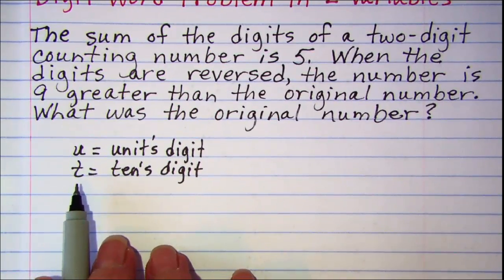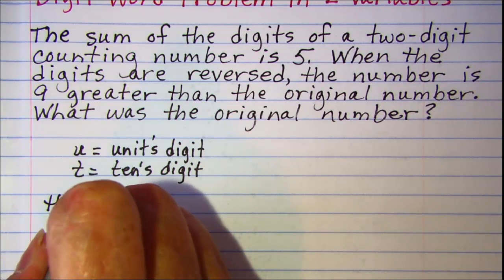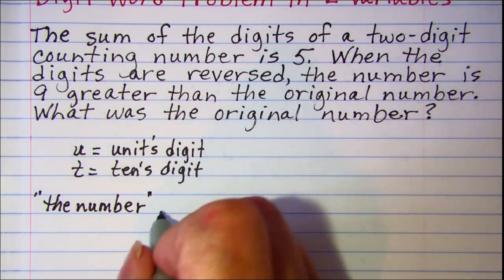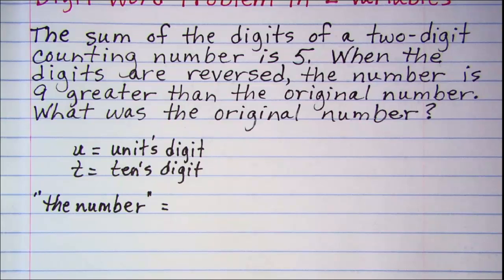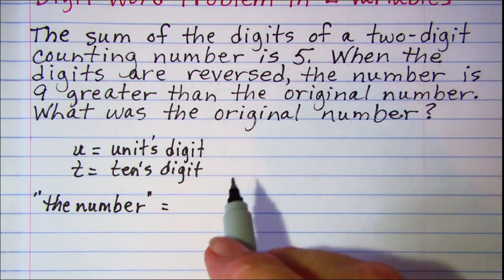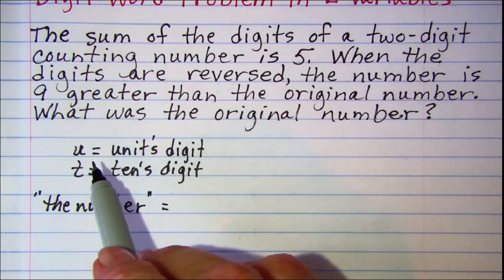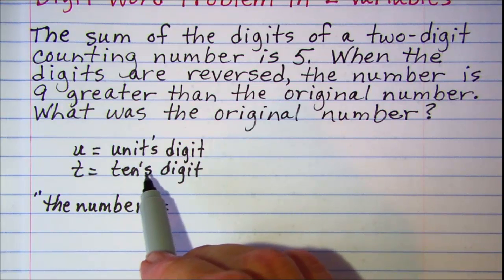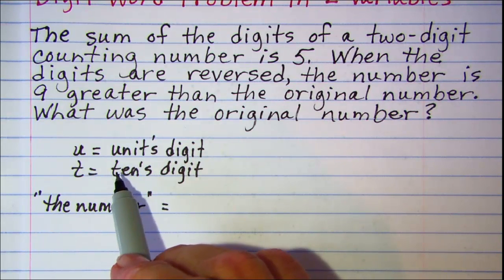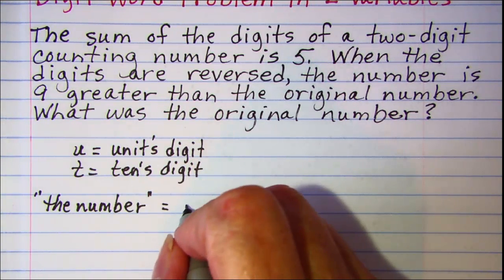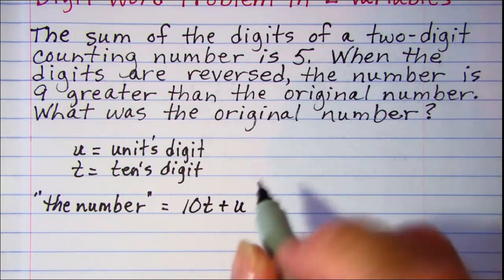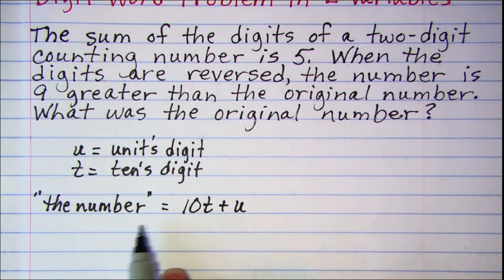Now, when we talk about the number, the expression that we use to represent the number is the one with the place values and the variables included. So, for our tens digit, remember that the tens digit is multiplied by 10 when we're talking about a number. And then our units digit is added on to that. So, 10t plus u is the number.